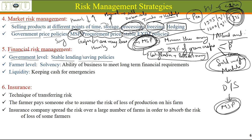Financial risk management — at the government level, the government should ensure stable lending and saving rate policies, with interest rates on loans and savings not fluctuating very much. At the farmer level, we should work towards building the solvency of the farmer — the long-term ability to meet financial obligations and pay debts — and ensuring liquidity, meaning the farmer should be following enterprises that provide cash income whenever needed for emergencies.